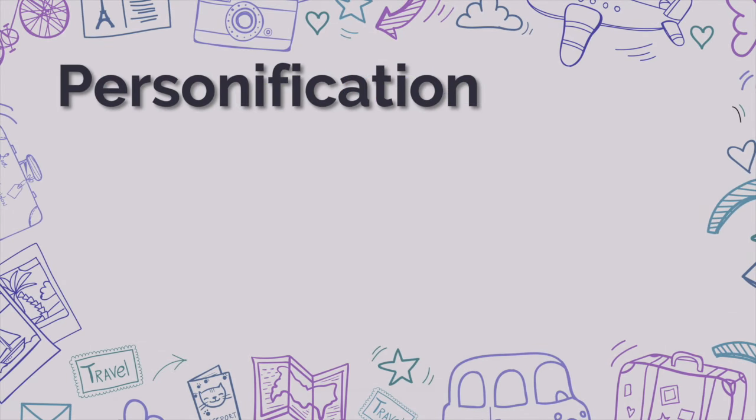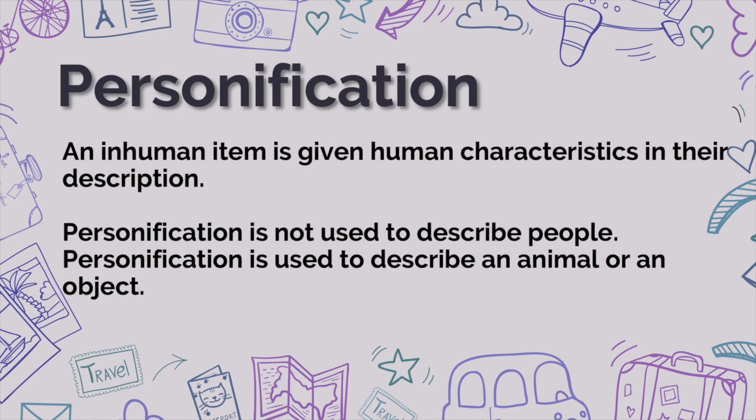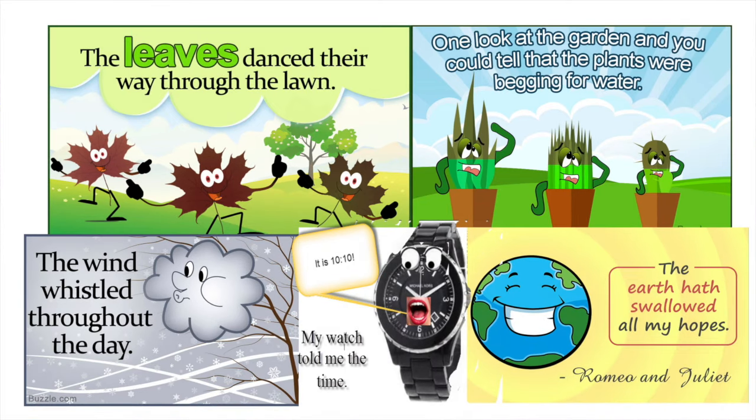Now, let's define personification. An inhuman item is given human characteristics in their description. Personification is not used to describe people, obviously. Personification is used to describe an animal or an object. For example, the leaves danced their way through the lawn.